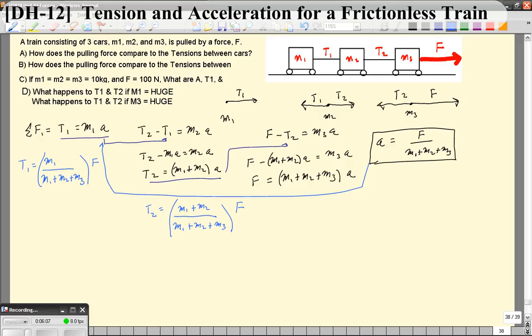It's worth considering, well, what happens if M1 is really big? In other words, if the caboose, the last car is really, really huge. Well, this is going to simplify to T1 equals huge over huge plus some other little stuff times F. In other words, the tension acting on the back car is essentially the same as the force that's being applied to the first car. So these first two masses don't really change this tension a whole lot if the back car is really, really huge.